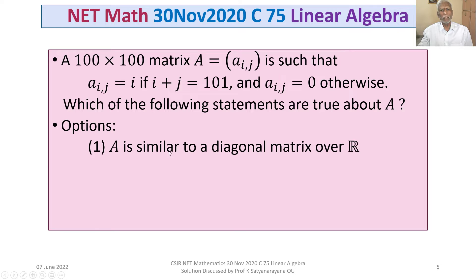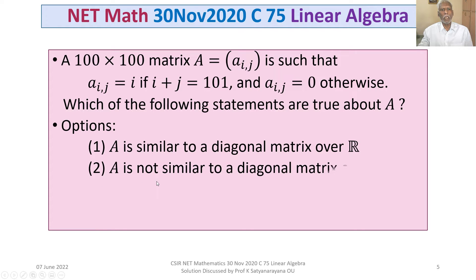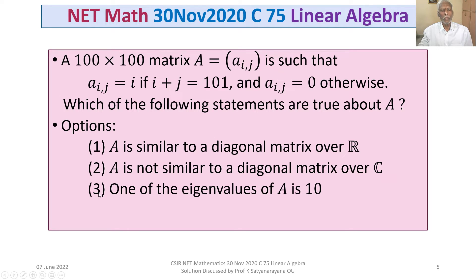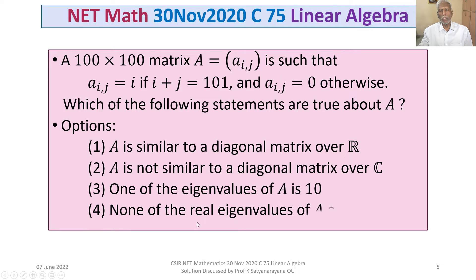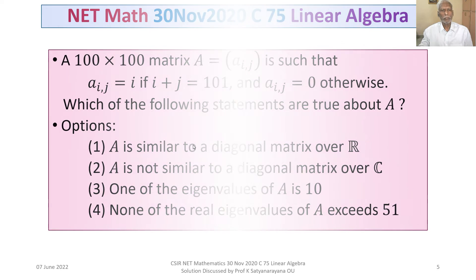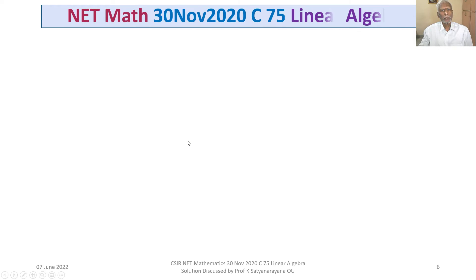The four options are: Option 1 — A is similar to a diagonal matrix over ℝ. Option 2 — A is not similar to a diagonal matrix over ℝ or over ℂ. Option 3 — One of the eigenvalues of A is 10. Option 4 — None of the real eigenvalues of A exceeds 51.